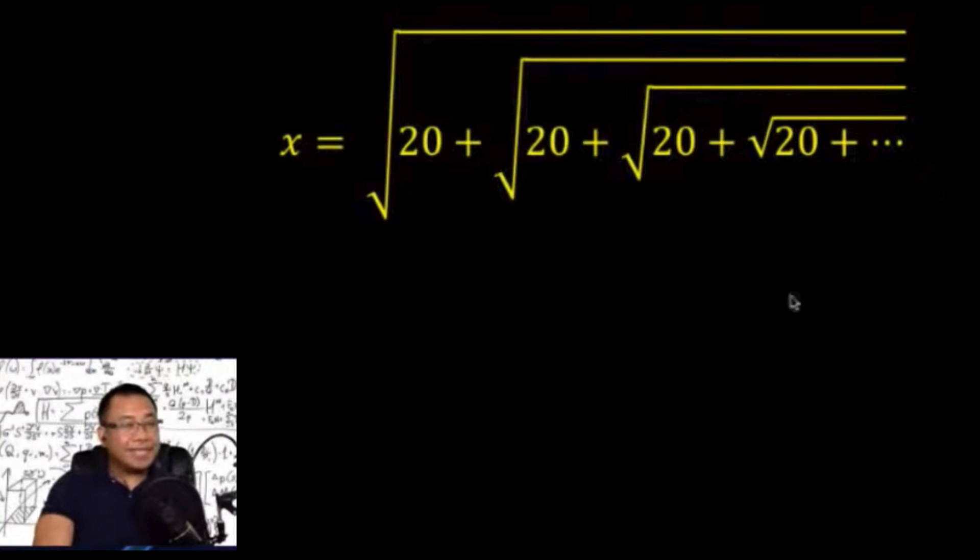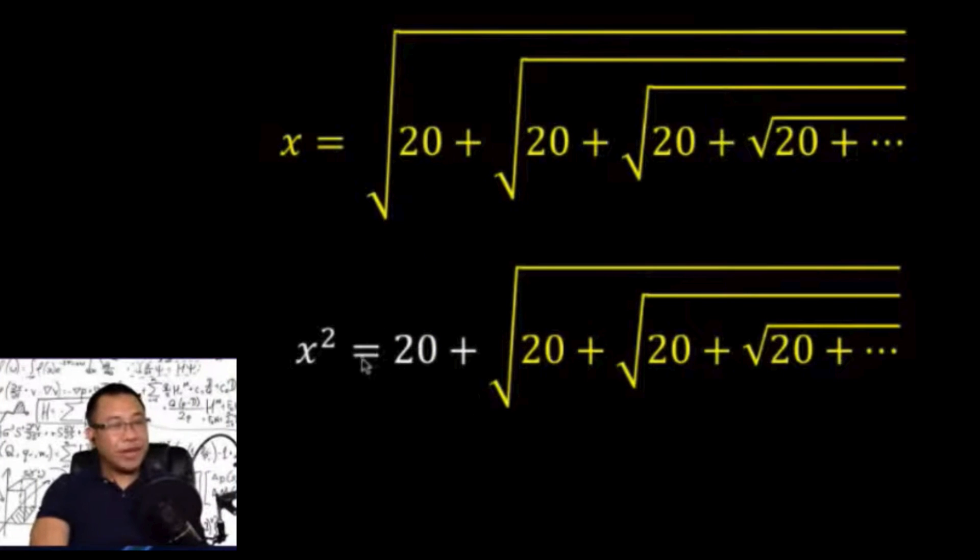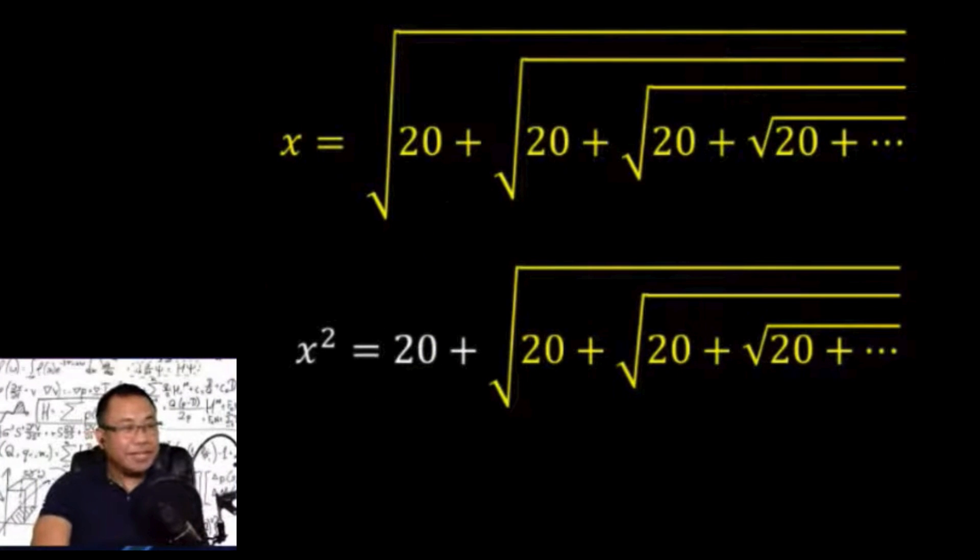We can see the self-similarity if we square both sides. So squaring both sides, we have x squared equals—if you square the right side, you will cancel out this square root and exponent 2, so this 20 is now outside the radical symbol and we copy all the rest.